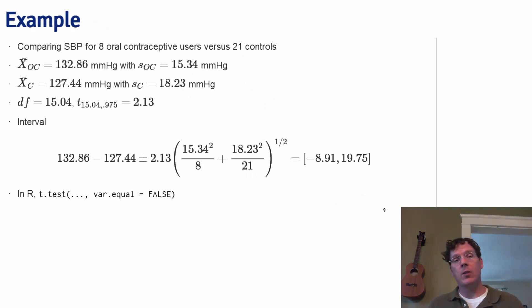On this page, I simply show churning through the calculations for the oral contraceptive example from earlier. You might want to go through this calculation just so you can convince yourself that you can plug into the standard deviation formula. Particularly, the degrees of freedom that you get in this case is 15.04.